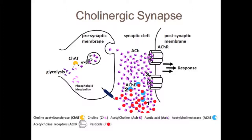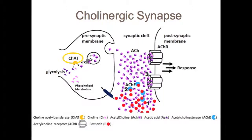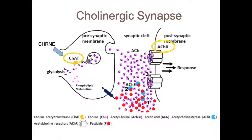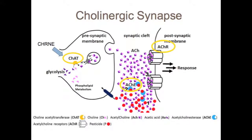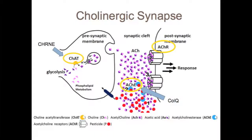In healthy individuals, the main signal acetylcholine is synthesized by choline acetyltransferase from choline and acetyl-CoA. This neurotransmitter is detected by an acetylcholine receptor in cholinergic synapses, which includes the epsilon subunit CHRNE. Later, acetylcholine is broken apart by acetylcholine esterase, which is bound by a collagen tail subunit CholQ.